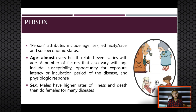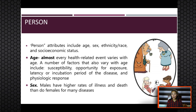For example, for COVID, those who are senior citizens or those who belong to the 60 and above age bracket are most susceptible to contracting the disease. A number of factors that also vary with age include susceptibility, opportunity for exposure, latency or incubation period, and physiologic response, which affects disease development. When analyzing data by age, epidemiologists try to use age groups narrow enough to detect any age-related patterns. For some chronic diseases, 10-year age groups may be adequate, but for other diseases, even 5-year age groups may conceal important variations in disease occurrence.